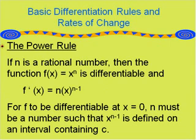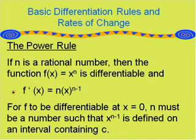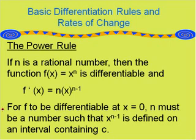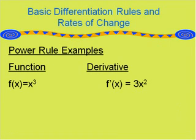Next, we have the power rule. This rule says that if n is a rational number, then the function f of x equals x to the n is differentiable and f prime of x equals n times x to the n minus 1. In simple terms, we bring down the exponent in front of the variable and then subtract 1 from the exponent. For f to be differentiable at x equals 0, n must be a number such that x to the n minus 1 is defined on an interval containing c.